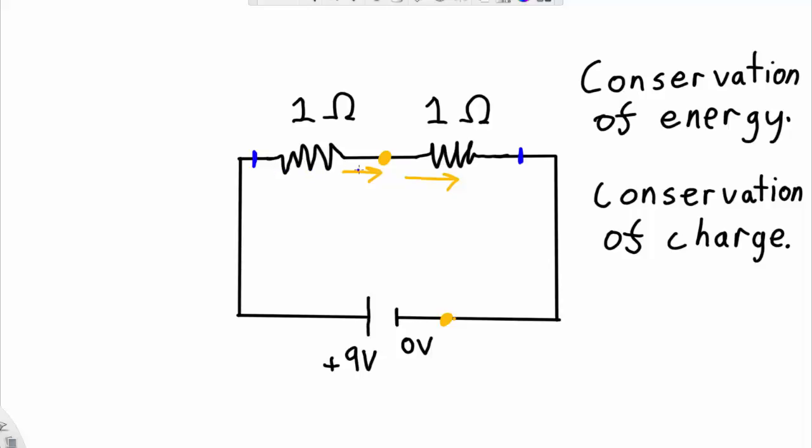And I also know that the amount of current that's going into this resistor must be equal to the amount of current going out of this resistor because of the node rule. So I know the current through each of these resistors must be the same.